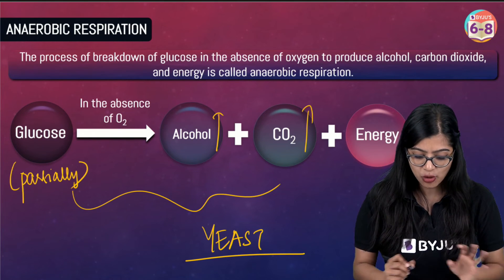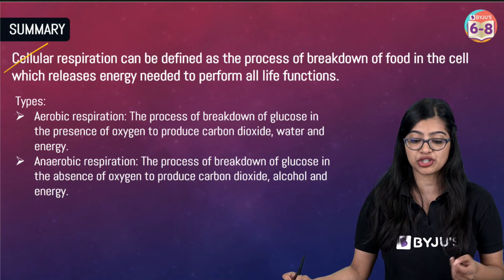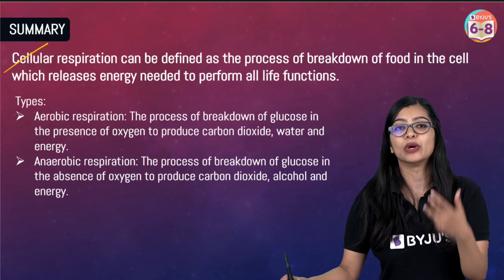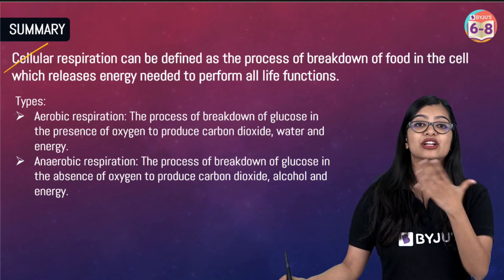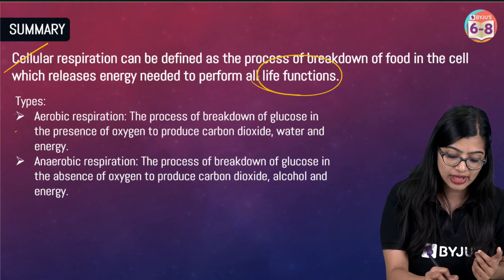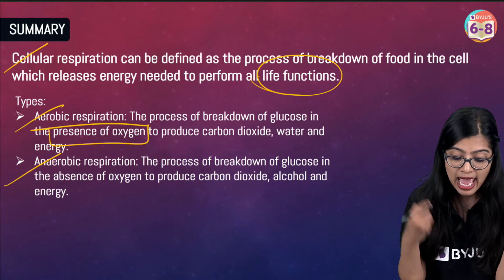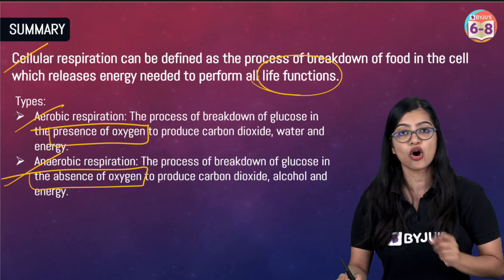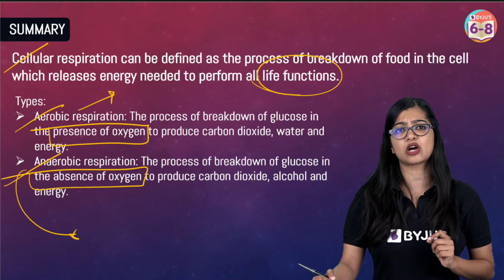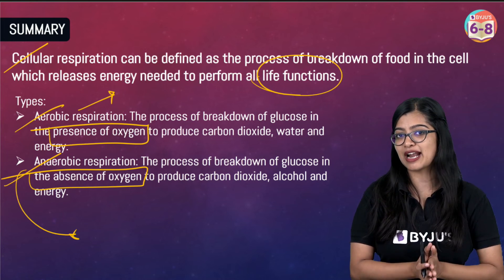So we've had a quick introduction to respiration. In this class we learned about cellular respiration — the process of breakdown of food, or breakdown of glucose, within the cell in order to release energy in the form of ATP required to perform all life functions. There are two kinds: aerobic respiration that takes place in the presence of oxygen with complete breakdown, and anaerobic respiration that takes place in the absence of oxygen with only partial breakdown.